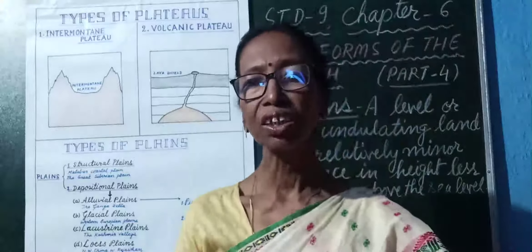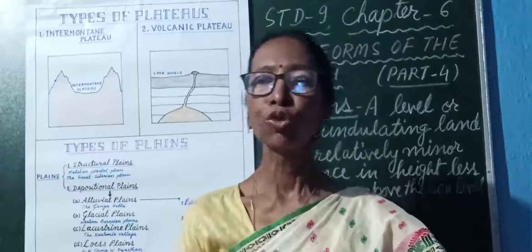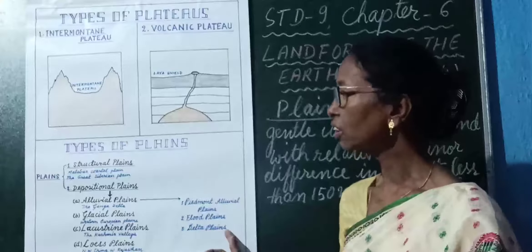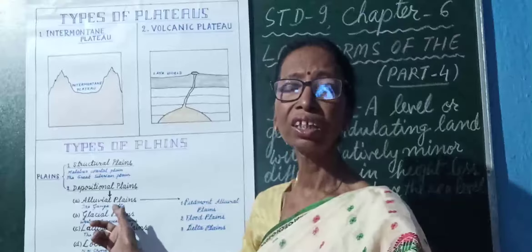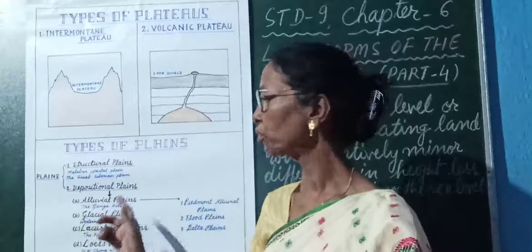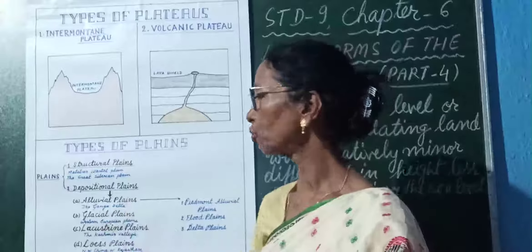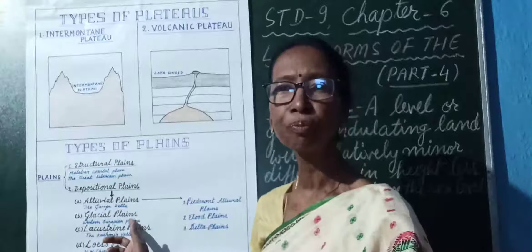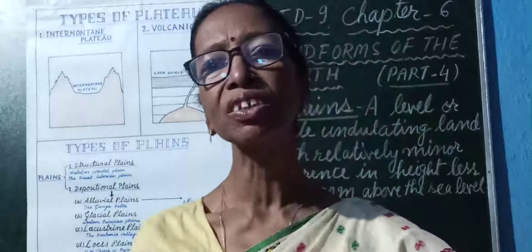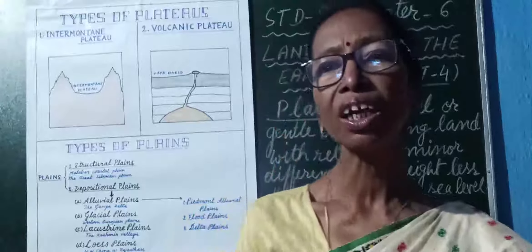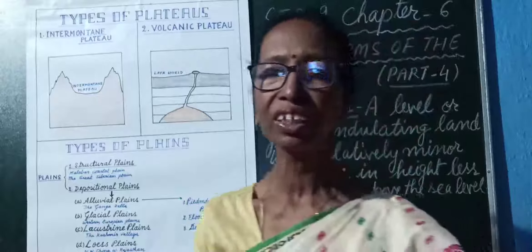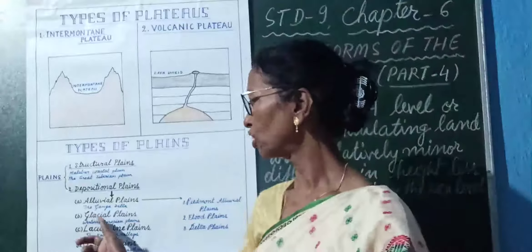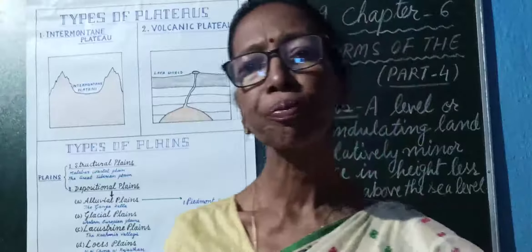Second is the Flood Plain. Every year when there is a flood in a river, a lot of sediments are deposited over a large area, forming a plain known as a Flood Plain — like the Ganga Plain, the Yangtze Plain in China, or the Mississippi Plain in North America. Third is the Delta Plain. Delta Plains are formed at the mouth of the river, where all the remaining sediments are deposited in the very low-lying area, forming what is known as a Delta Plain.